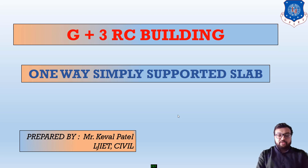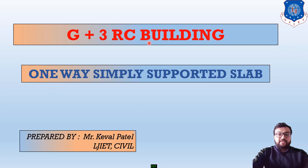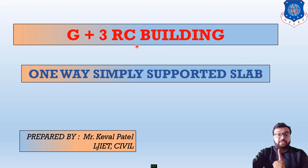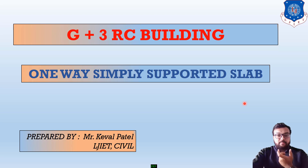Now we move to our first example, which is a one-way simply supported slab. As the name indicates, in a one-way slab, main steel runs in the shorter direction and distribution steel runs in the longer direction. The classification as simply supported slab is useful when finding the ratio value in step number 1.